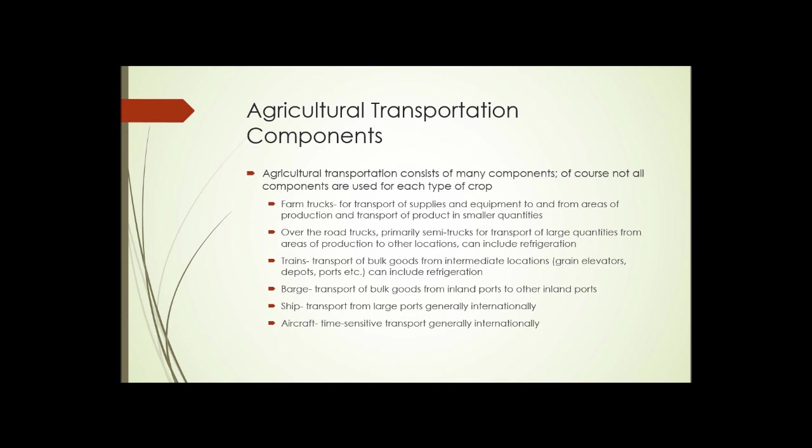The open sea is the province of ships. Ships transport from large ports and generally transport internationally — from ocean ports or from inland ports such as the Great Lakes — moving bulk goods that way. And finally, aircraft are primarily used for time-sensitive transport and generally internationally. They're the least efficient.